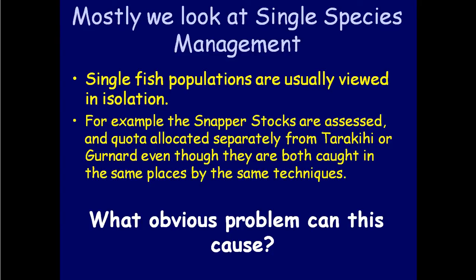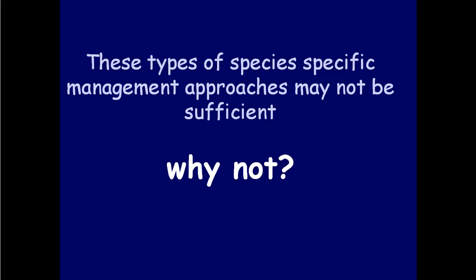Single fish populations are usually viewed in isolation. For example, snapper stocks are assessed and quota allocated separately from trevally or gurnard, even though they're both caught in the same places by the same techniques. The obvious problem this can cause: you could overfish one species by targeting another.